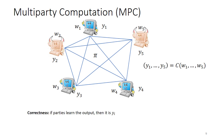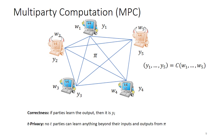In MPC, we require first of all that if the parties learn the output, it is the correct output of the computation. That means even if we have servers that try to disturb the computation, they will not be able to make an honest server output another value and think it is correct. Moreover, in an MPC protocol we require T-privacy, meaning that no T parties can learn anything beyond their inputs and outputs from the protocol — they can derive no information about the inputs of other parties by looking at values seen in the transcript.